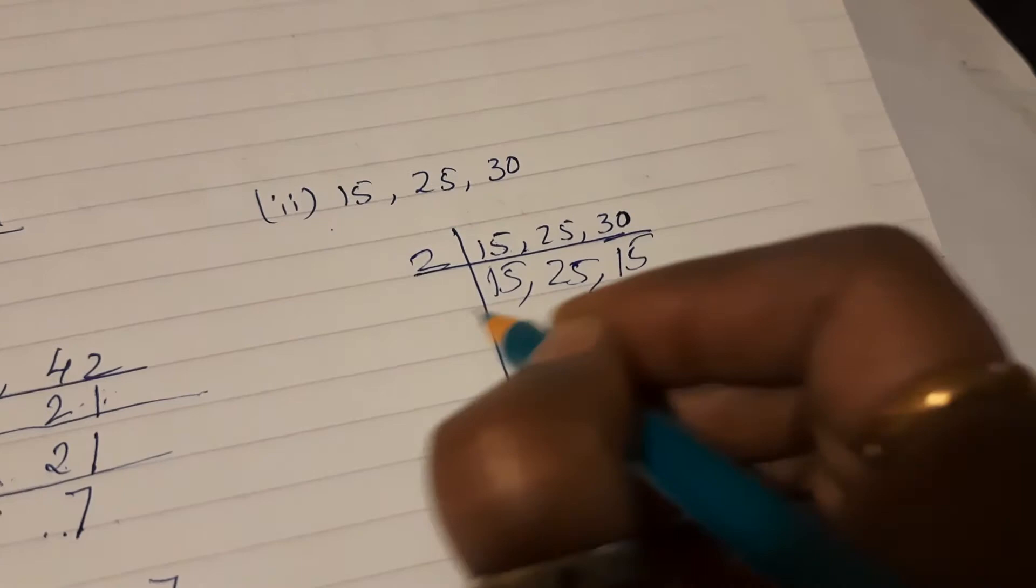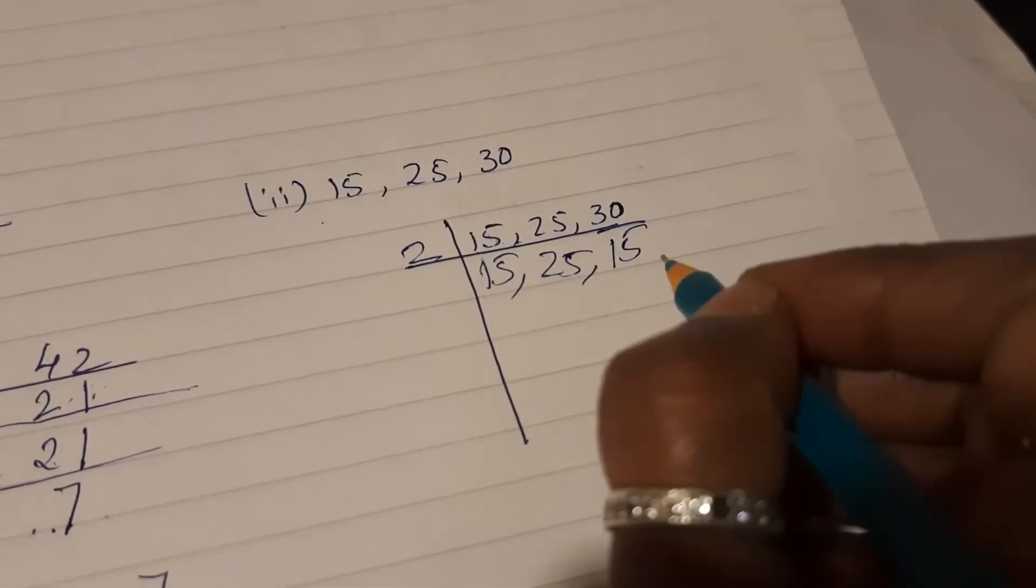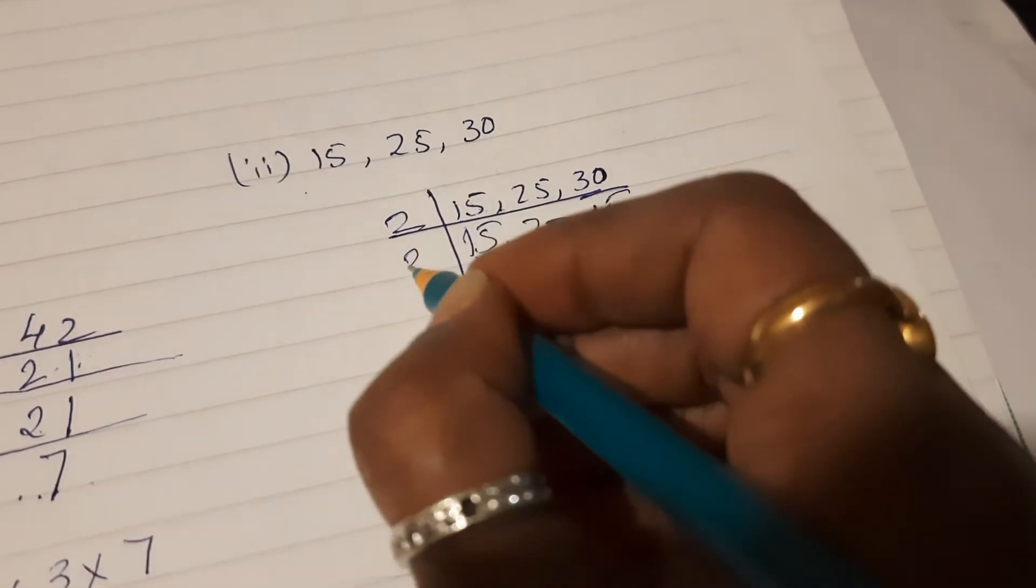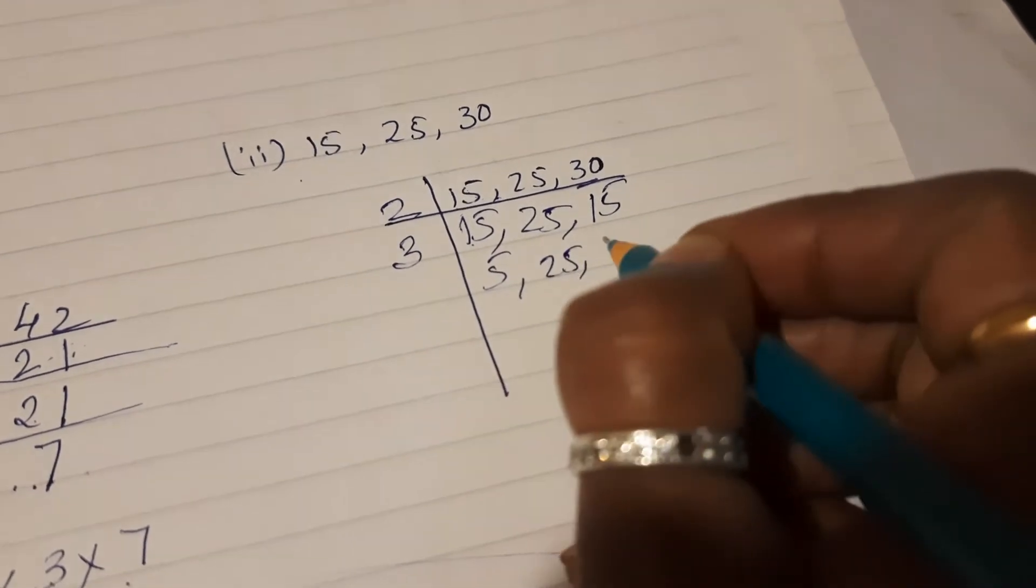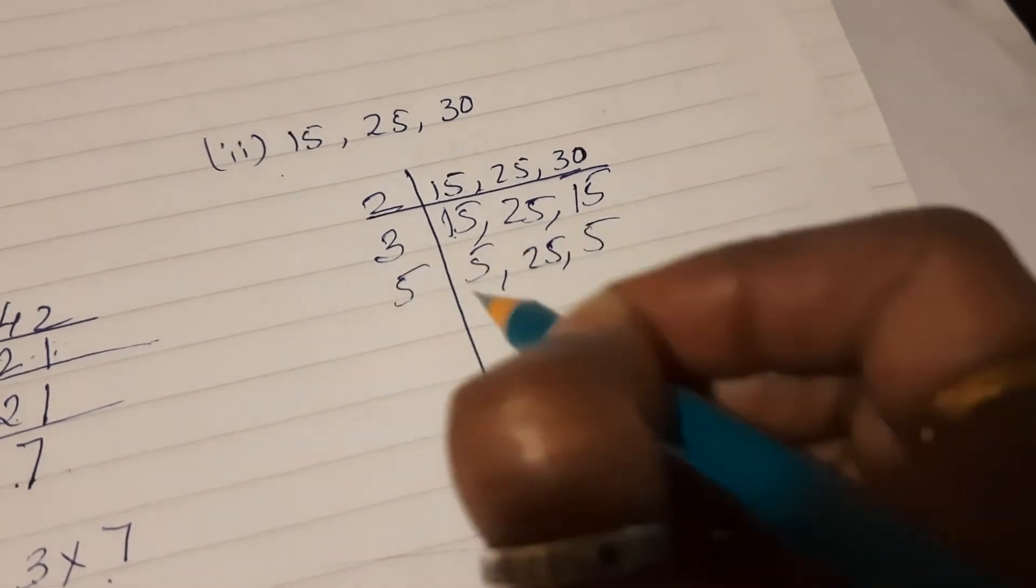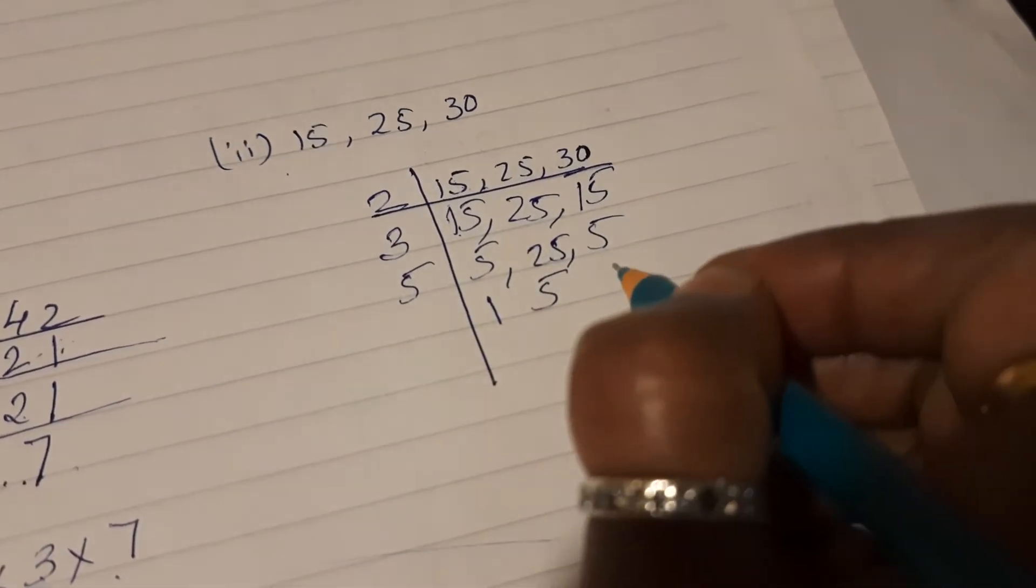2 twos, 5 are 10. Then now it will not go by 2, it will go by 3. 3 fives are 15. We can do that first. 3 fives are 15, bring 25 down, 3 fives are 15. Now all will go by 5, so 5 ones are 5, 5 fives are 25, 5 ones are 5.